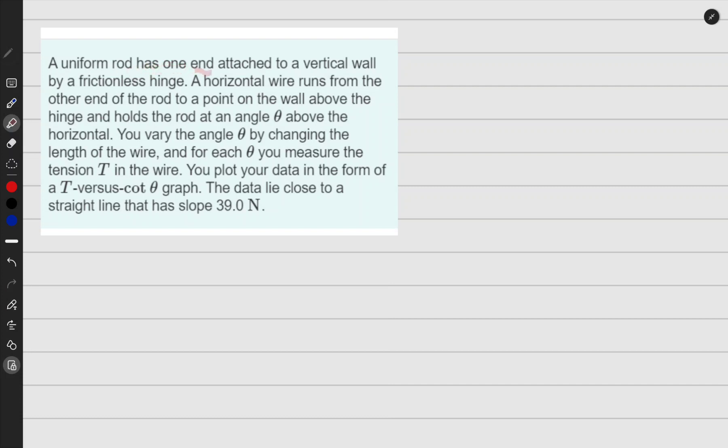A uniform rod has one end attached to a vertical wall. So now we know there is a vertical wall like this, by a frictionless hinge. So now we know on the wall there is a hinge.